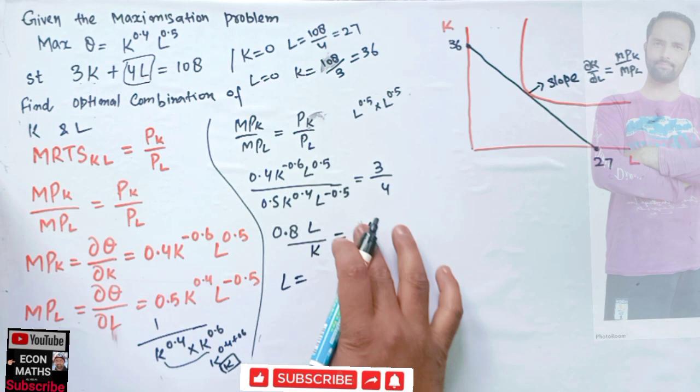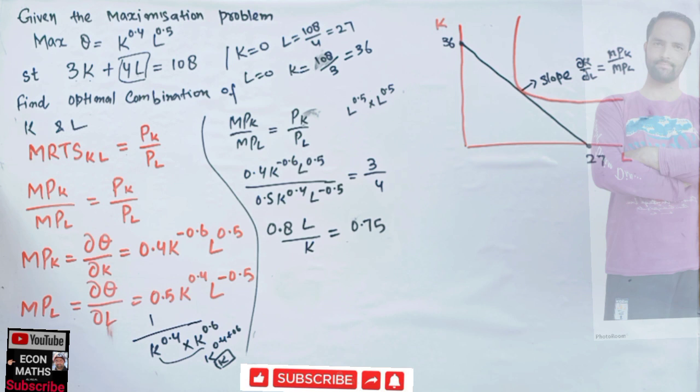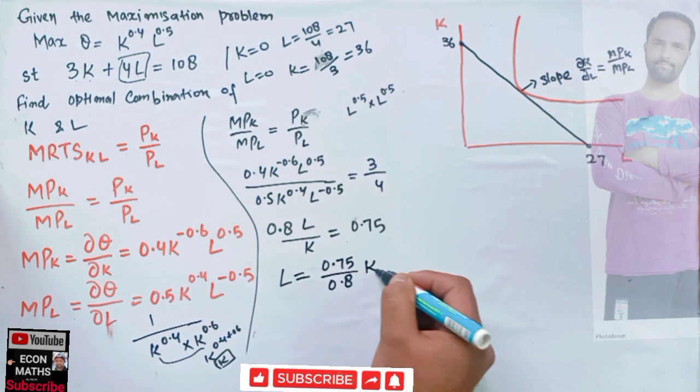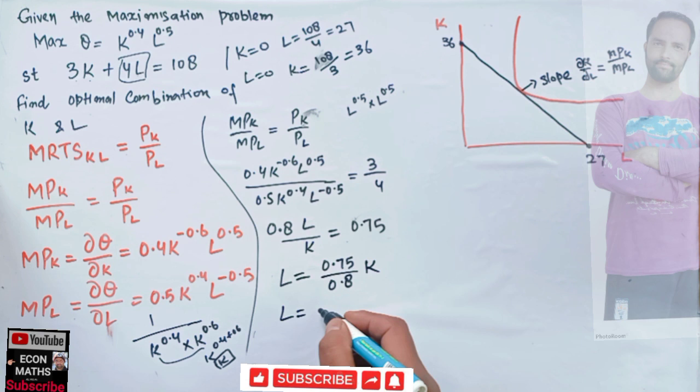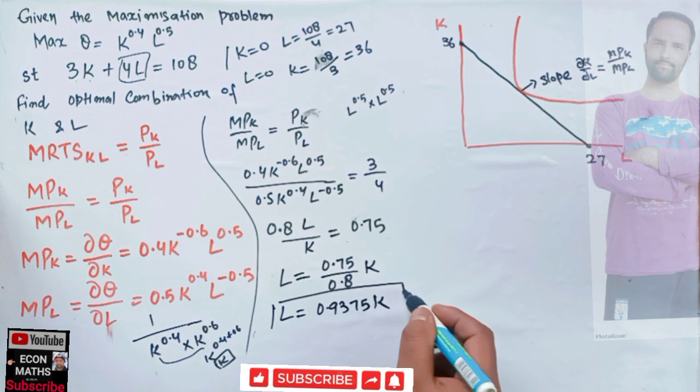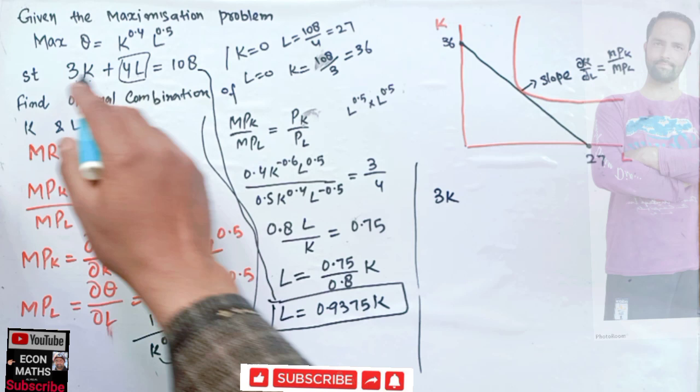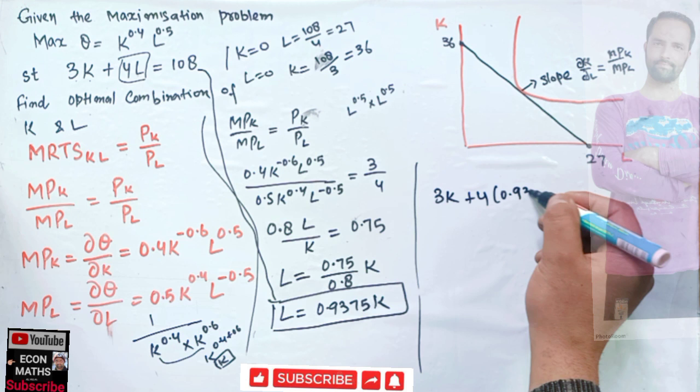This gives us l/k = 3/4 divided by 0.8 = 0.75 / 0.8, so l = 0.9375k. Now we plug this value of l into our production constraint 3k + 4l = 108.